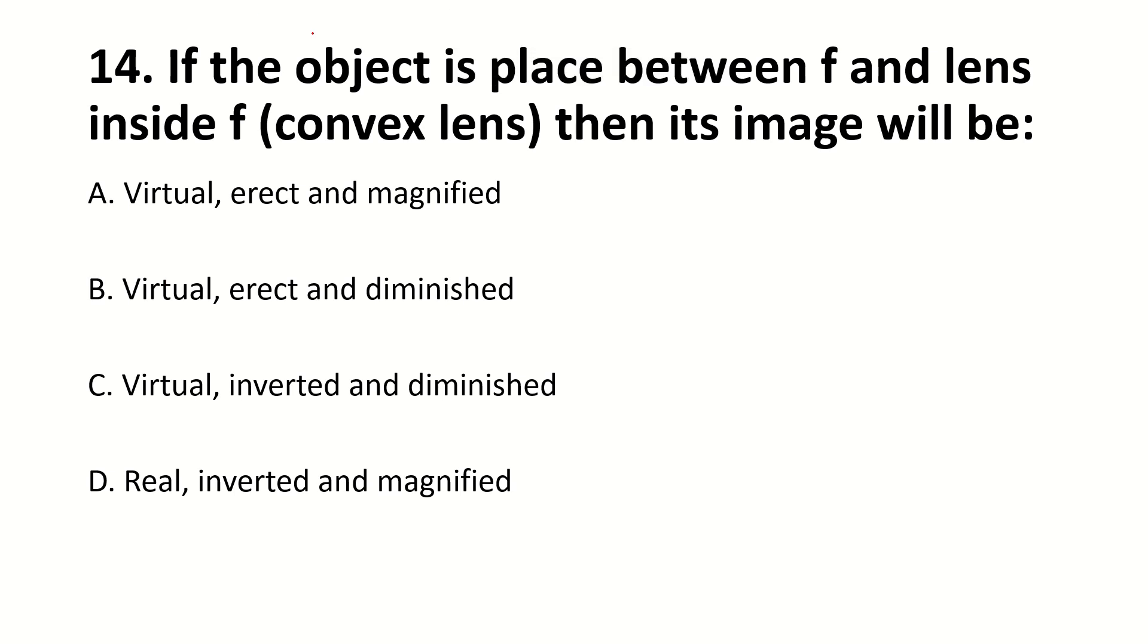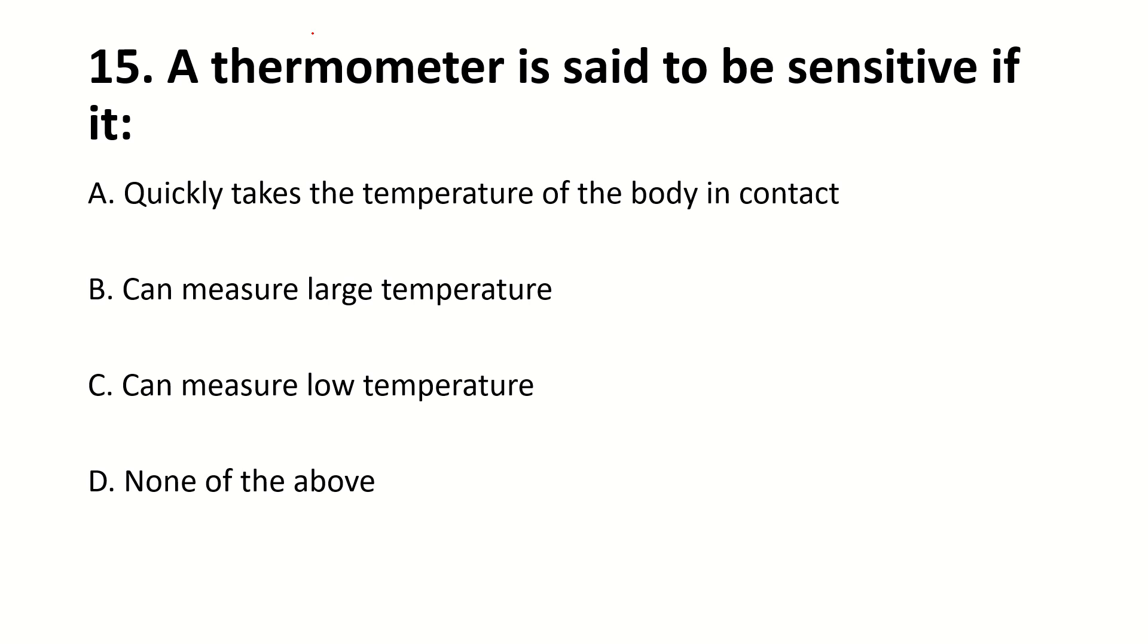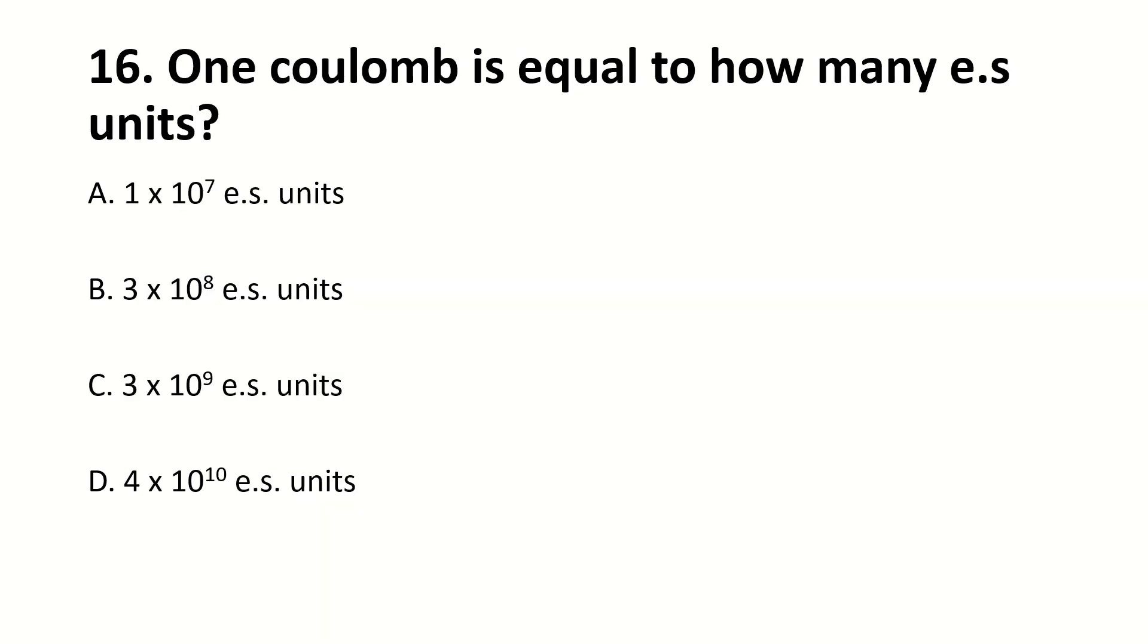If the object is placed between f and lens inside f convex lens then its image will be dash. Right answer is virtual, erect, and magnified. A thermometer is said to be sensitive if it dash. Right answer is can measure low temperature. One coulomb is equal to how many ES units. Right answer is 3 × 10⁹ ES units.